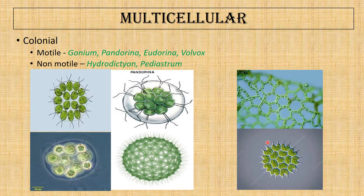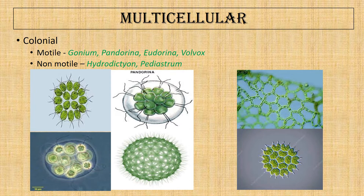Hydrodictyon and Pediastrum are examples of non-motile green algae. In Hydrodictyon, each cell forms a net-like structure. The peripheral structures on Pediastrum are not flagella — they are just hook-like structures. Both Hydrodictyon and Pediastrum are non-motile; however, they can be moved by water currents but do not move actively.